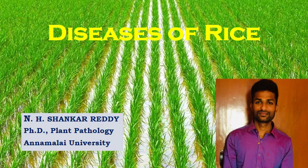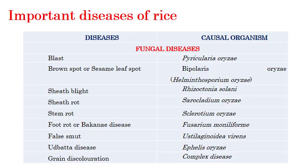Rice is one of the most important staple food crops in India and Asia. My name is NH Shankar Reddy and I'm doing a PhD in Plant Pathology at Annamalai University. There are between 50 to 100 diseases that occur in rice, but we will discuss only the important ones. These include fungal, bacterial, and viral diseases.